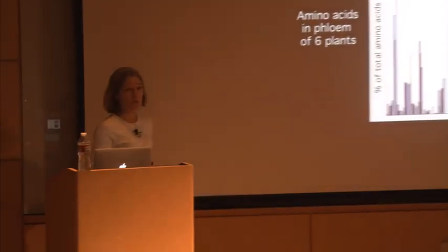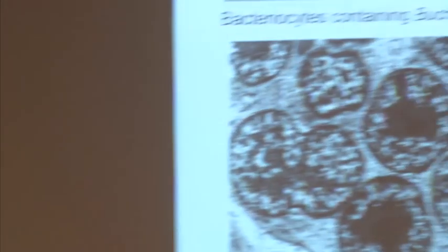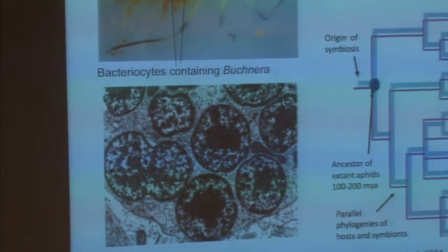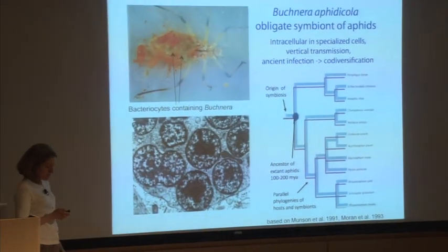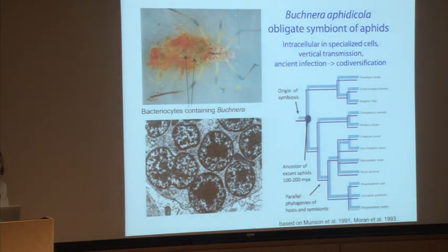Phloem sap, the sole diet of aphids, is lacking in essential amino acids — lower than are optimal for balanced nutrition in insects — so Buchnera can make the essential amino acids. Before the Buchnera genome was studied in terms of genomics, people hypothesized a lot of things that the symbionts might do — make sterols, various things — that they don't in fact do. Now we can know not only what they do but also rule out a few things.